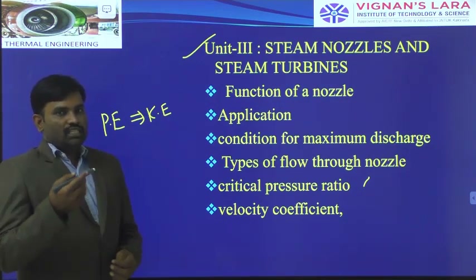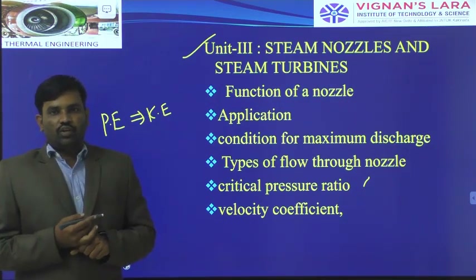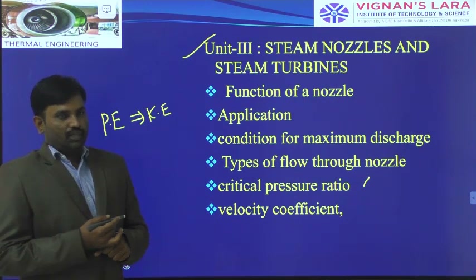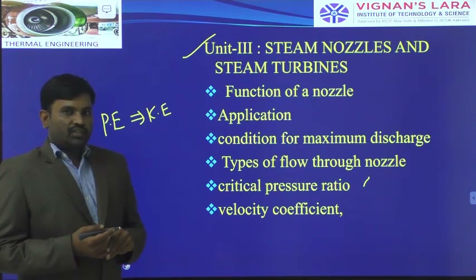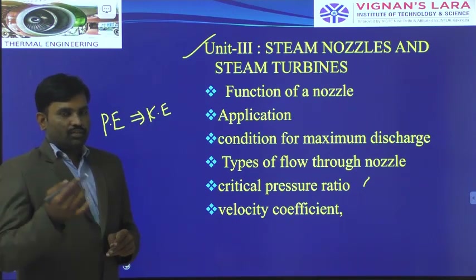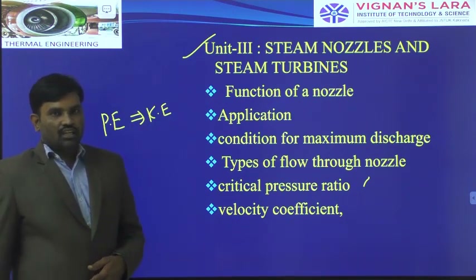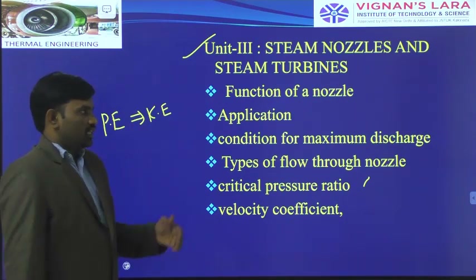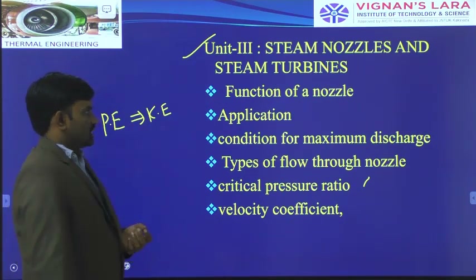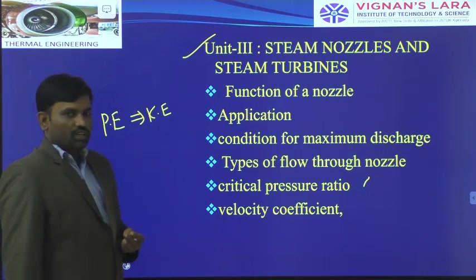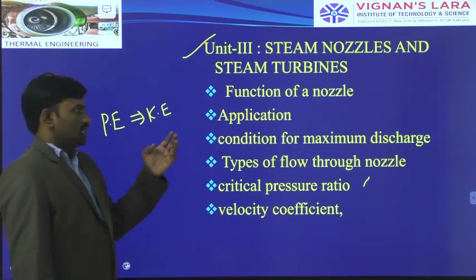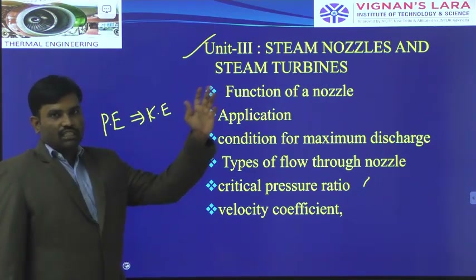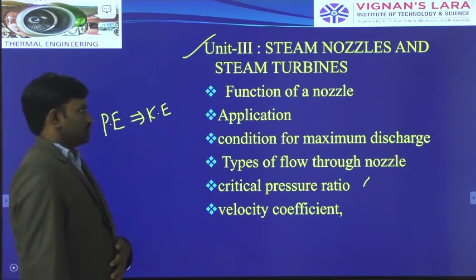Because of the striking of high velocity steam on the blades, the turbine wheel rotates very fast on the turbine shaft. From the shaft we receive the power output from the turbine. That power output is used in our application — either for power generation or for other applications.